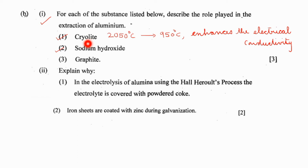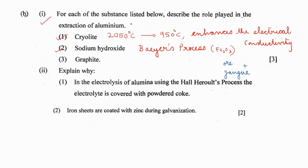What's the role of sodium hydroxide? Hot concentrated sodium hydroxide is used for the purification of bauxite ore. This process is known as Bayer's process. The main impurity associated with bauxite ore is Fe2O3. When the ore and impurity are treated with hot concentrated sodium hydroxide, the ore will be soluble while the gangue remains insoluble, so they can be separated easily.